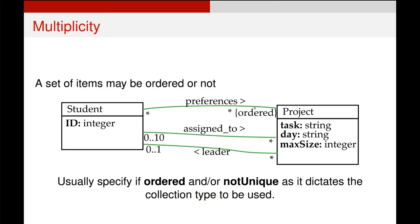This one at the top is probably the most interesting. It's essentially saying a student can pick as many different projects in their preferences as possible, but the order in which they do that is important. And so rather than just having the star or the zero dot dot star, because remember they mean the same thing, we write this little tag here called ordered. And ordered means the order in which that relationship occurs is important. And this will dictate the collection type we use to implement it when we code it up.